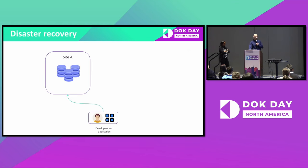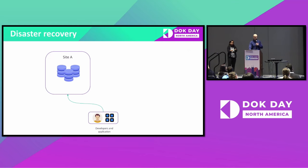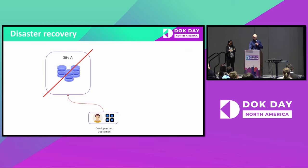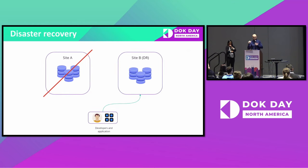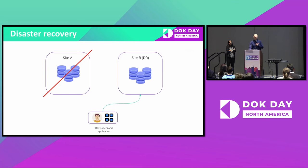In a nutshell, disaster recovery for databases looks like this: you have site A with the database, your application, and developers — everything is working and everyone is happy. Then something goes south: the database fails or the whole site goes down. Developers are unhappy, the application is broken, and business is losing money. You have site B as your DR site, restore your data there, and everyone is happy again.